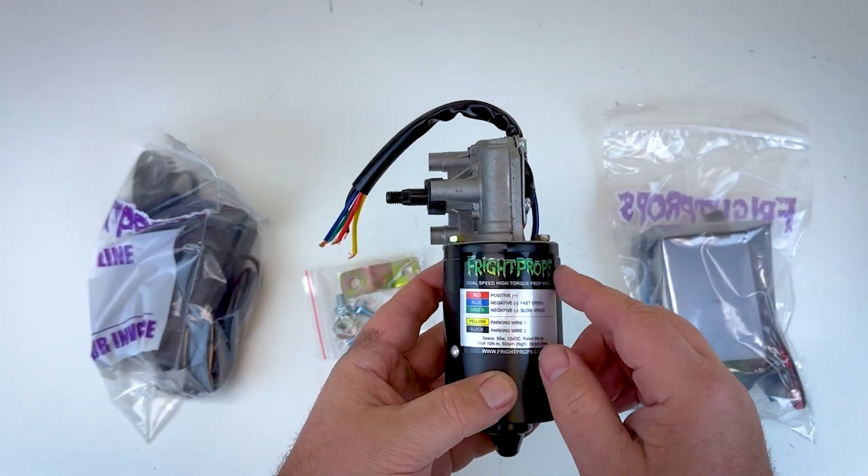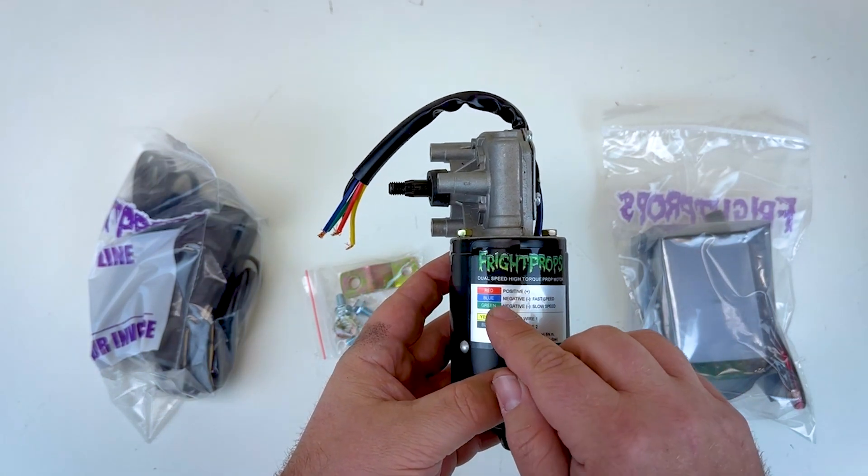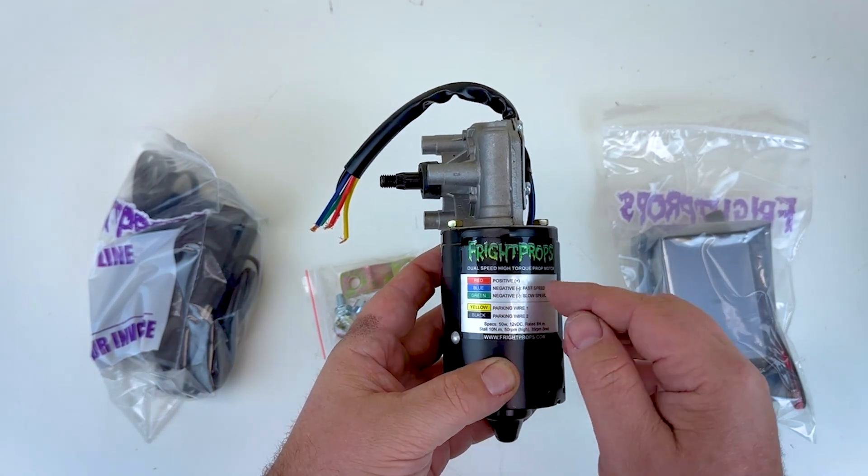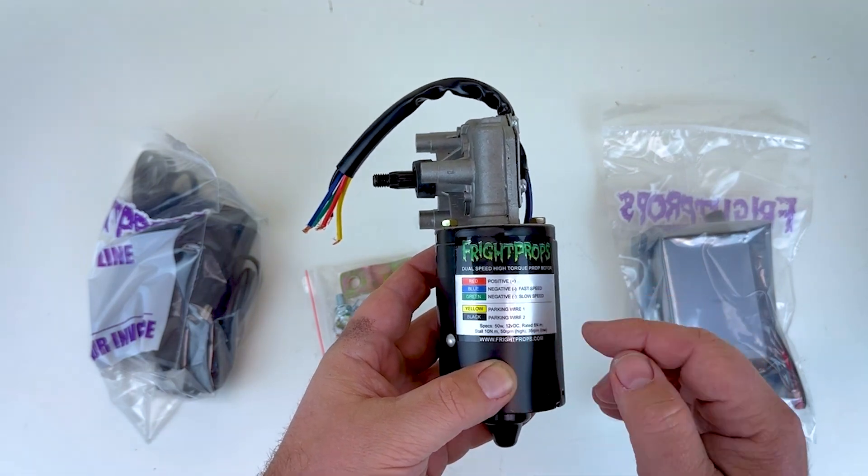The motor itself comes with a label that actually tells you what the wires are on the motor. You have your red wire as your positive, you have two negative wires, a blue and a green, so you use the blue for fast speed and the green for slow, and then you have your two parking wires, yellow and black.